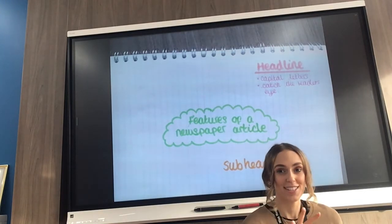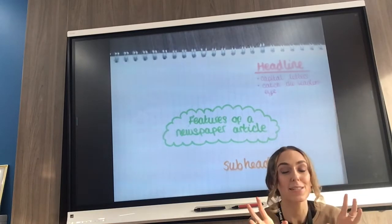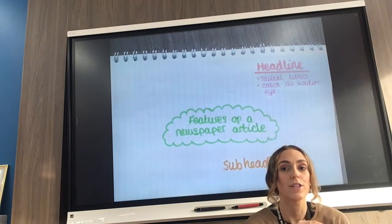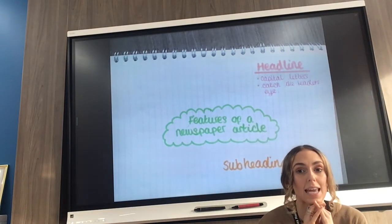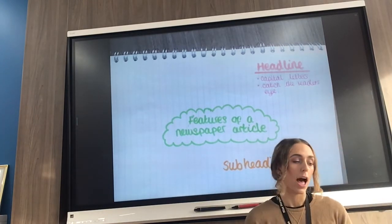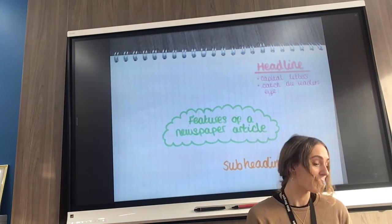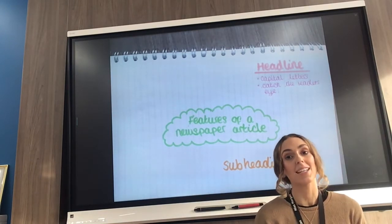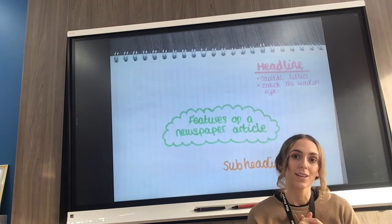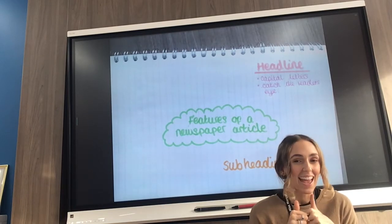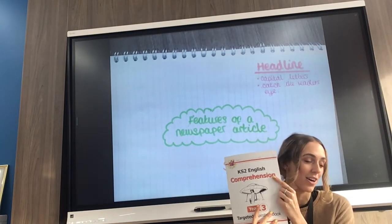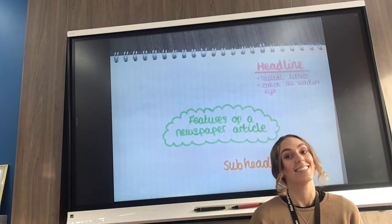I'm looking forward to seeing your posters. I want them to be as bright as possible, and I want to see lots of reasons why those features are included in a newspaper article. If you get a little bit stuck and can't remember what features go in a newspaper article, rewind this video and go back to when we were learning about it. Then we are going to move on to our CPG book to answer some questions about our text. See you in a second.